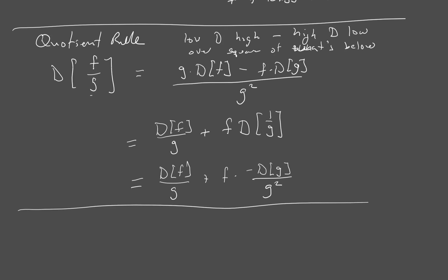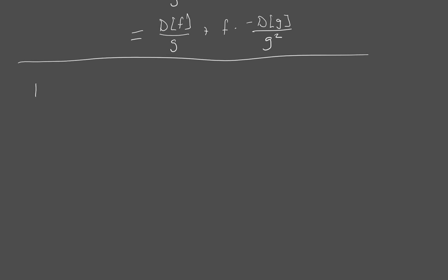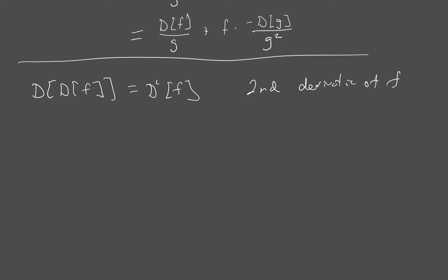The last thing in this section is notation for higher order derivatives. If you take the derivative twice — the derivative of the derivative of f — I write that as d squared of f, and this is the second derivative of f. Other notations include f double prime, or y double prime. In the d dx notation, you can put the squared on it and distribute the squared to the two pieces, so you have d squared over dx squared applied to f.